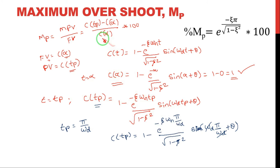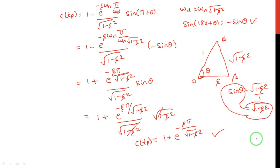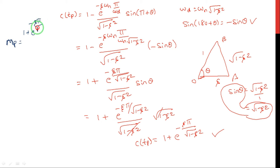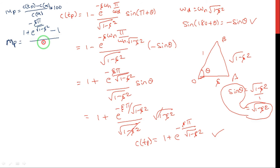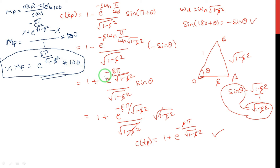Now we substitute both expressions into the maximum peak overshoot formula. MP = [c(tp) − c(∞)] / c(∞) × 100 = [1 + e^(−ζπ/√(1−ζ²)) − 1] / 1 × 100. The 1s cancel, giving the percentage maximum peak overshoot formula: MP = e^(−ζπ/√(1−ζ²)) × 100. This is the formula for maximum peak overshoot.